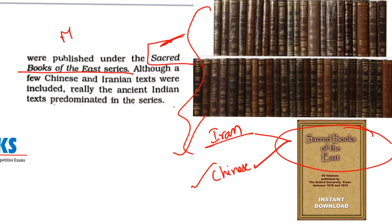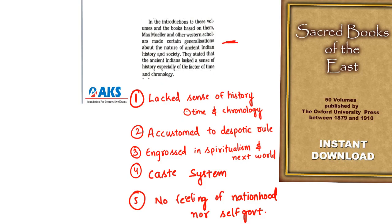Max Muller, who spent most of his time in Britain, made several generalizations about Indians in the introductions of these 50 volumes. They gave a nature of ancient Indian history and society. The first charge was that Indians lacked a sense of history — especially of time and chronology. If you look at our epics, they never give exact places or maintain chronology. This may be because ancient Indian books were written on birch bark or leaves, which decayed, and history was preserved only through oral tradition like the guru-shishya tradition.